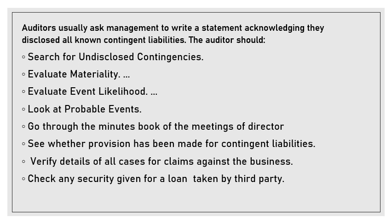The auditor should check any security given for a loan taken by a third party — for example, if the company has acted as a guarantor for someone else. If that party doesn't pay, then the company will pay. This liability may or may not arise; it depends on what happens in the future. If that party pays, no liability arises; if that party doesn't pay, the company's liability will arise automatically. These are some liabilities of the company which should be verified by the auditor properly.